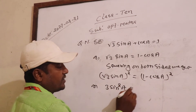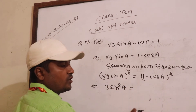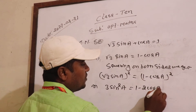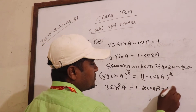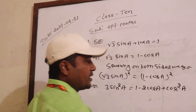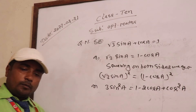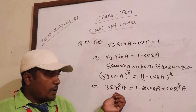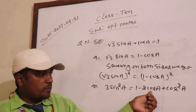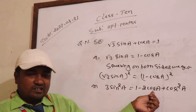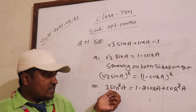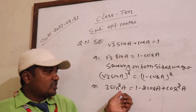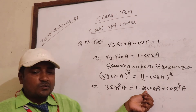3 sin squared A is equal to this formula: 1 minus 2 cos A plus cos squared A. Now cos squared is not a problem. Sin to the power, cos to the power — same like cos class.